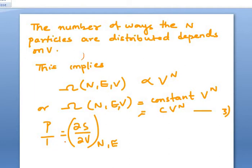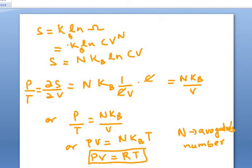From our knowledge in thermodynamics we know P/T = (∂S/∂V)_E constant. Here S = kB ln Ω = kB ln(CV^N) = N kB ln(CV). We know P/T = (∂S/∂V). This becomes N kB when you do the differentiation, which is 1/(CV) × C. So this comes out to be N kB/V. You know what is N kB? N kB where N is the Avogadro's number and kB is the Boltzmann's constant, which is nothing but the gas constant R. Finally we derive the ideal gas equation: PV = NRT.